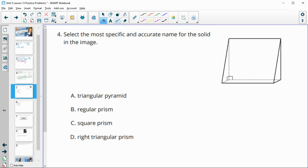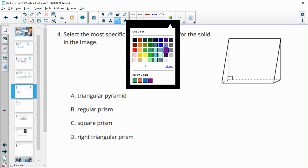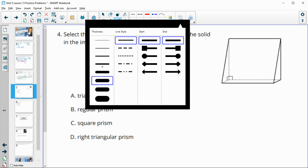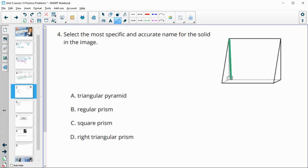Number four, select the most specific and accurate name for the solid shown. So hopefully you see that we have two triangles here, and that's where our parallel cross sections are coming from. So we could just move this parallel to itself to create this whole shape. These are our base shapes. We've got two of them, so it has to be a prism. It's not a pyramid. And then the base shape is a triangle, so it's a right triangular prism.